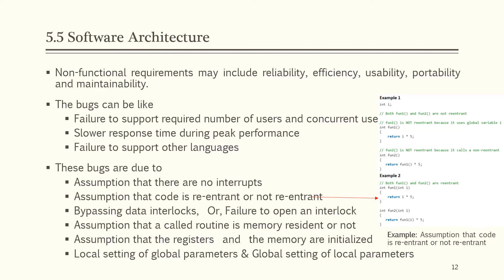Software architecture bugs relate to non-functional requirements such as reliability, efficiency, usability, portability, and maintainability. Bugs include failure to support the required number of users and concurrent users, slow response time during peak performance, and failure to support other languages. These bugs can be due to the assumption that there are no interrupts.